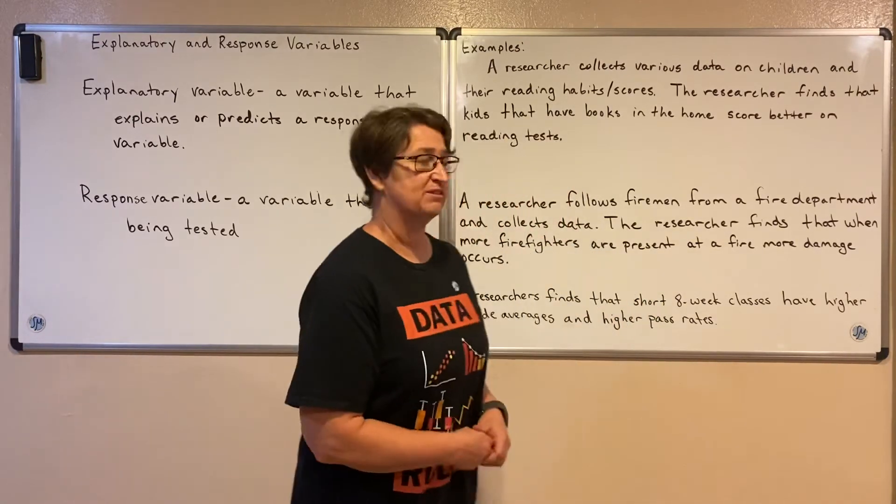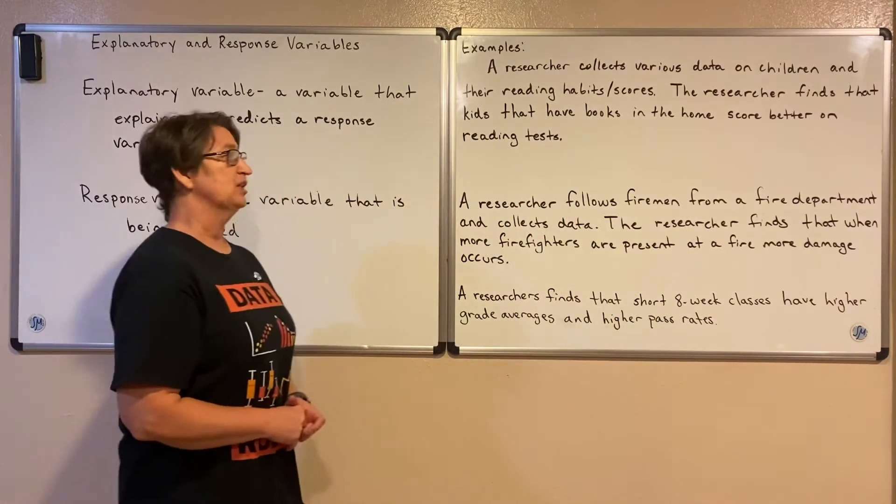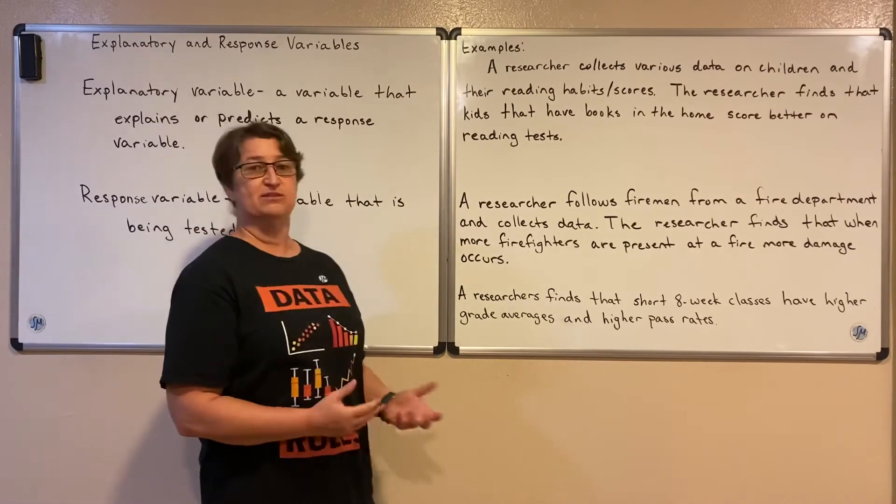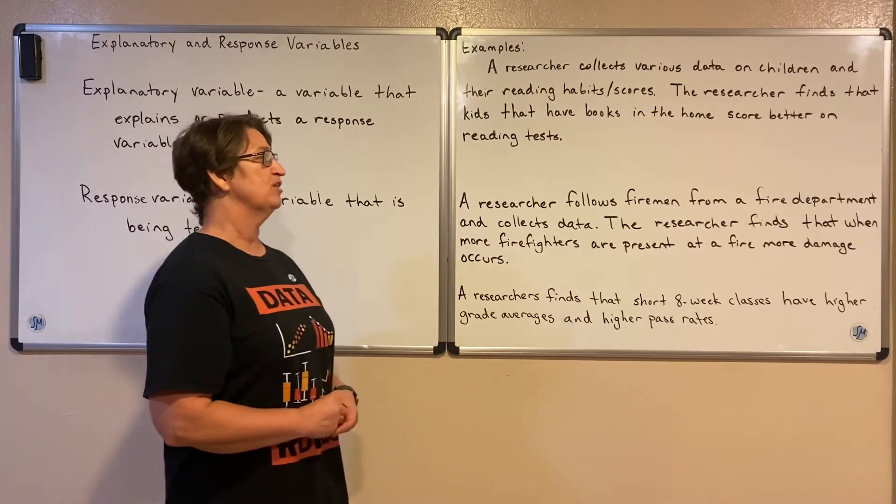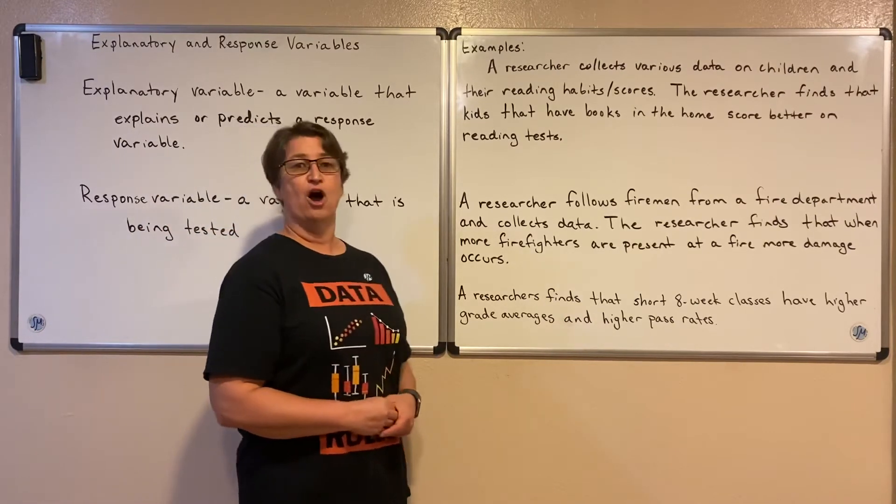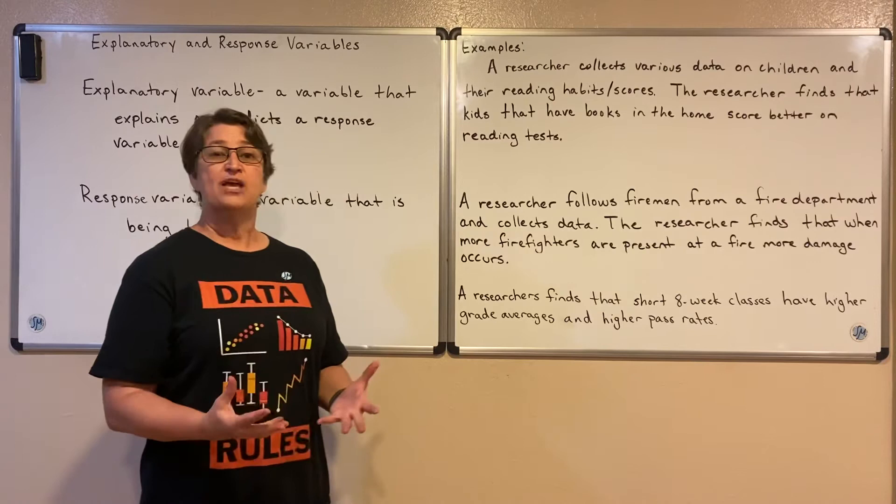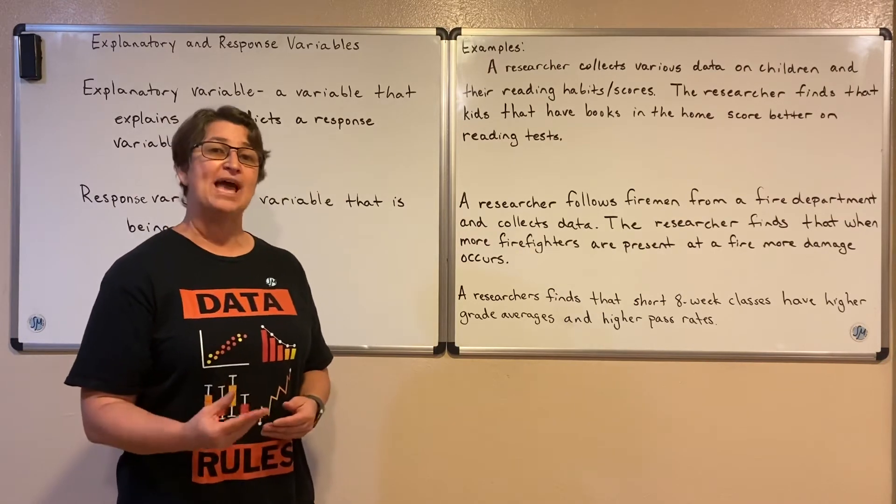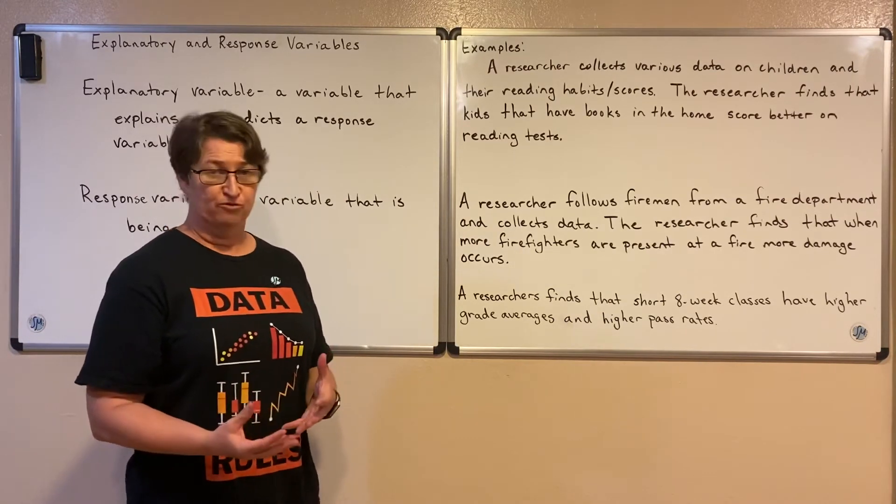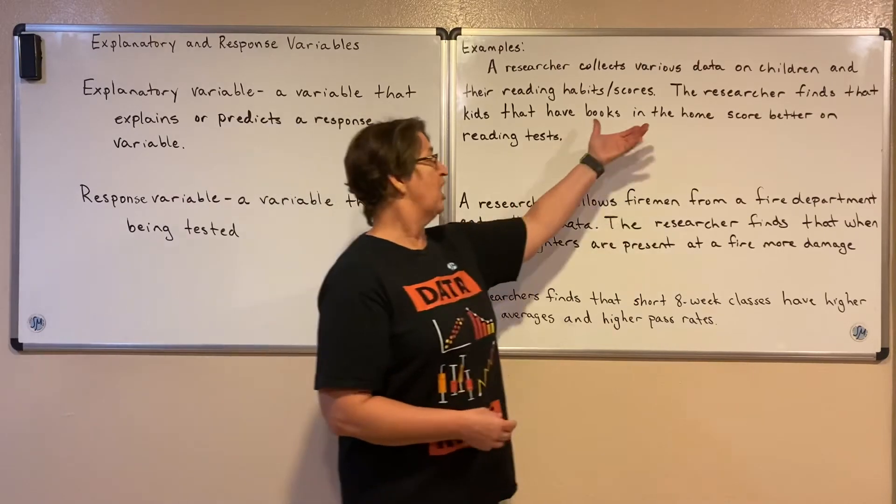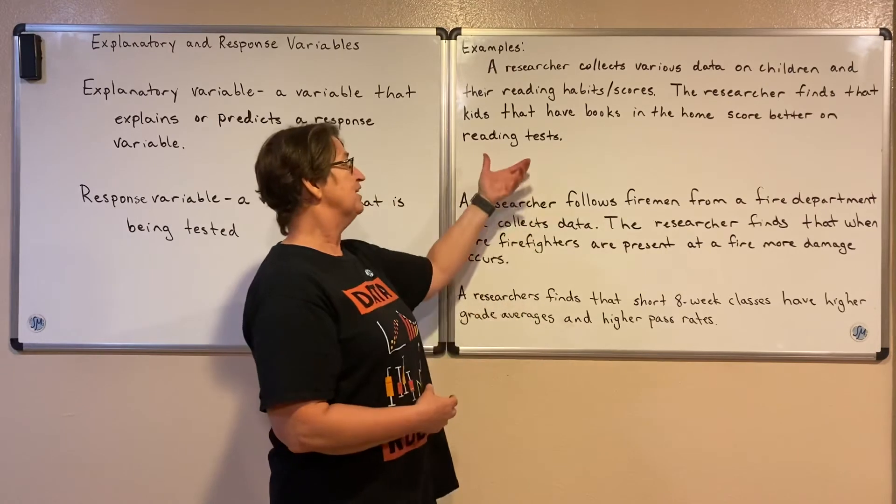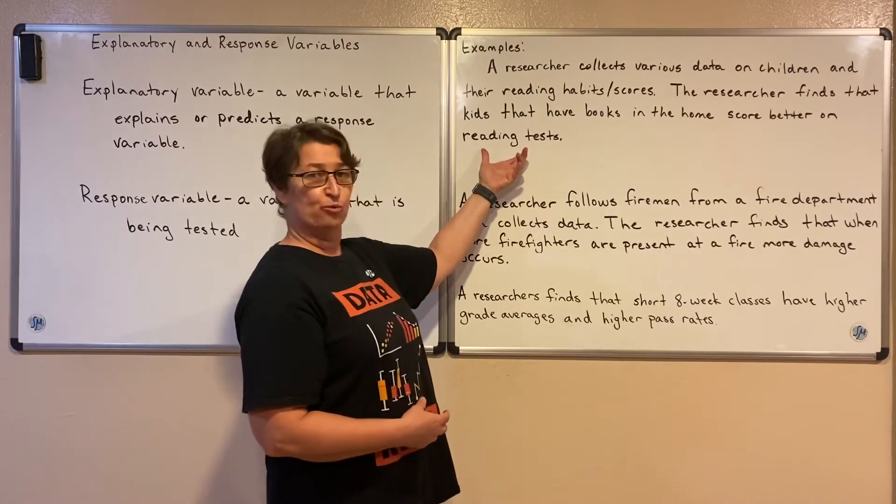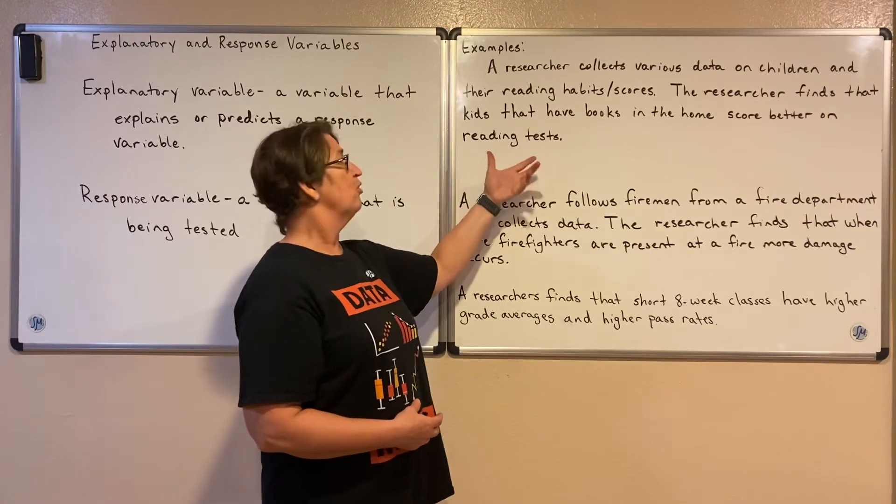Let's look at some examples. A researcher collects various data on children and their reading habits and scores. The researcher finds that the kids that have books in the home score better on reading tests. In this case, my explanatory variable is the number of books in the home, and the response variable is the score on the reading test.